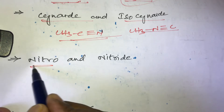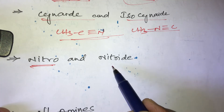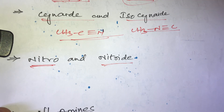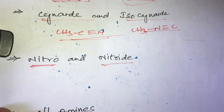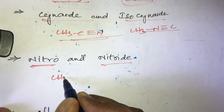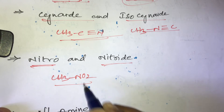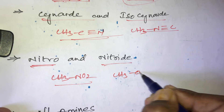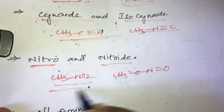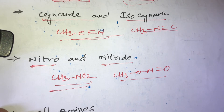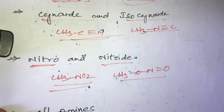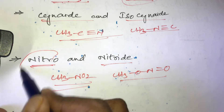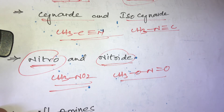Another example is nitro and nitrite compounds. For example, CH3NO2 is methyl nitro compound, and CH3ONO is methyl nitrite. Both belong to functional isomers — methyl nitrate and methyl nitrite have the same molecular formula but different functional groups.